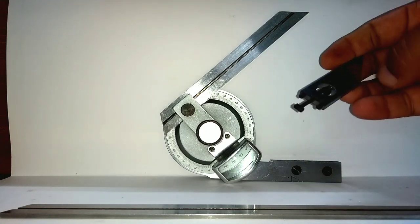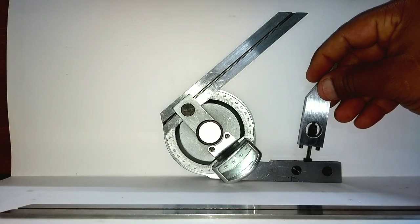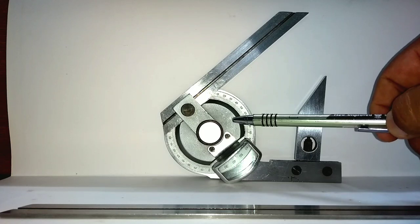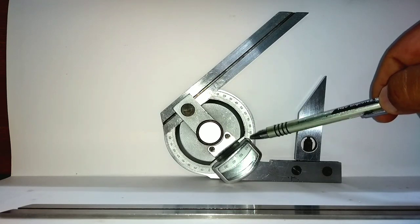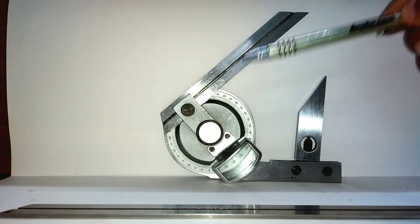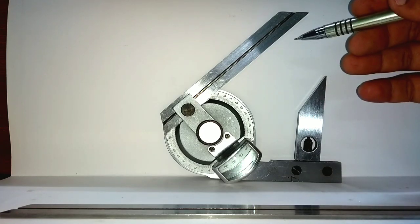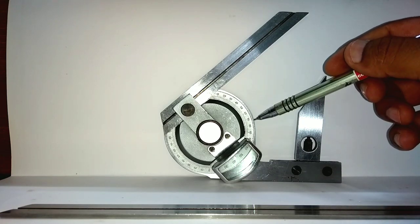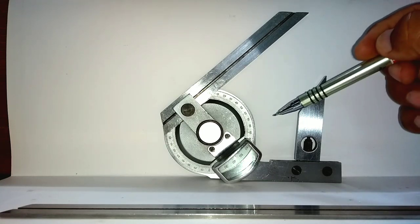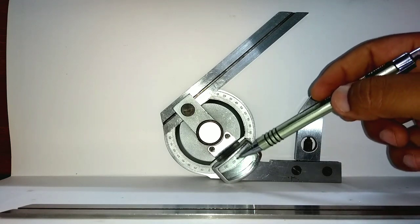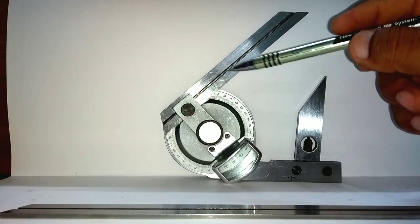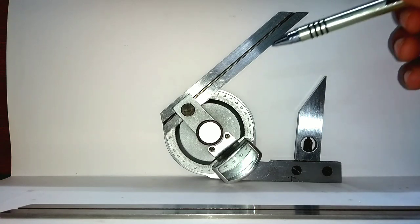As far as accuracy of this bevel protractor is concerned, as it is used for angular measurement, we can give the accuracy in terms of minutes. The main scale is in degrees and vernier scale in combination will give us the least count in minutes. For the least count, we have the formula: smallest division on main scale, that is 1 degree or 60 minutes, divided by 12 divisions on the vernier scale. So least count for this universal bevel protractor will be 5 minutes.